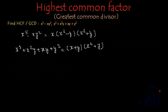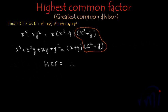And now if we talk about the HCF, the highest common factor, I think there is only one factor which is common among the two, which is x squared plus y. So the HCF of x to the power 5 minus xy squared and x cubed plus x squared y plus xy plus y squared is x squared plus y.